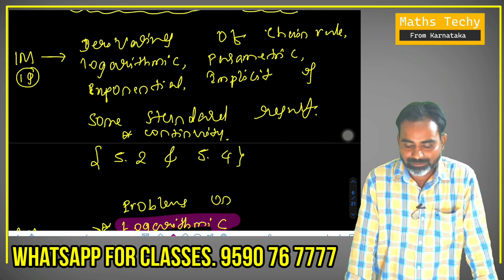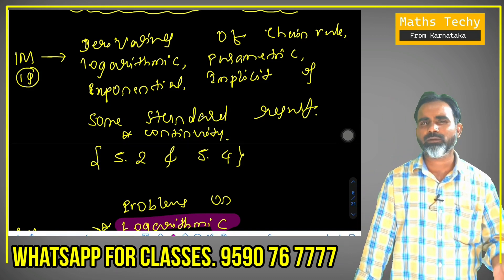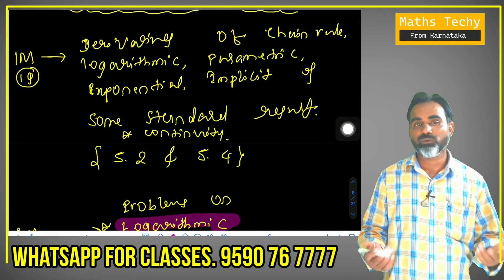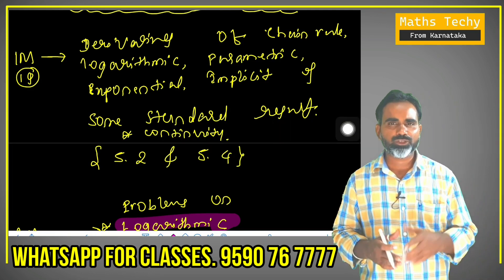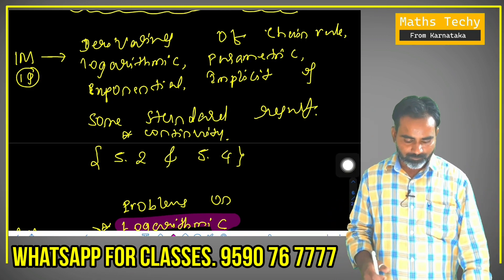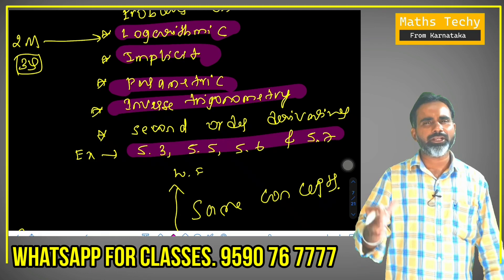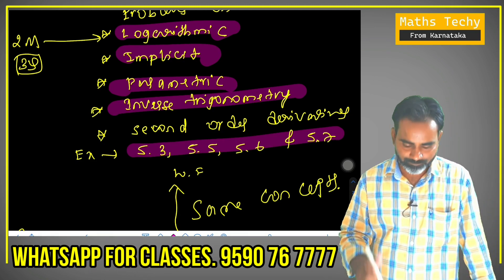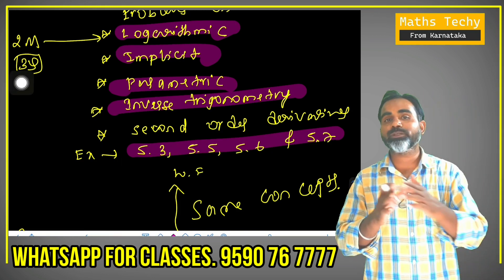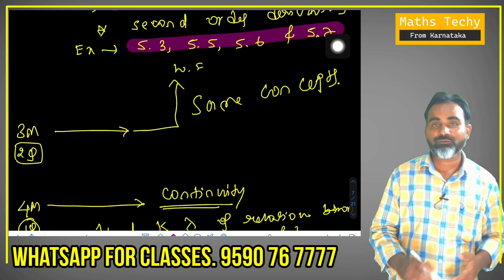Continuity and differentiability: 1 mark is common. Composite function, implicit function, parametric function, logarithm function is very simple — derivation is very simple. Some standard results can be done; important questions are known. Exercise 5.2 and 5.4 are perfect. Here we have 2 marks in the logarithm function, implicit function — parametric and second order derivatives are very rare. Exercises 5.3, 5.5, 5.6 and 5.7 are perfect.